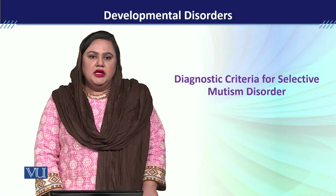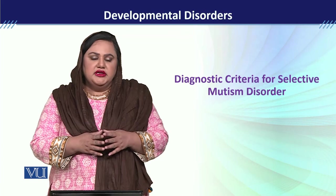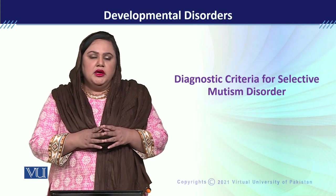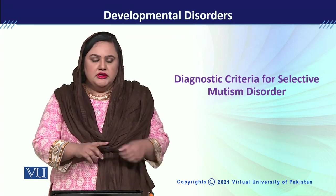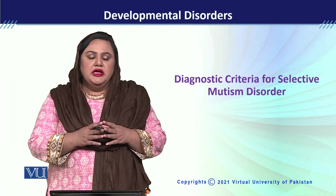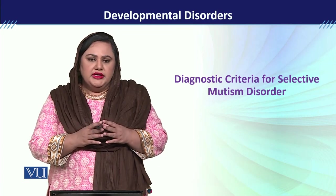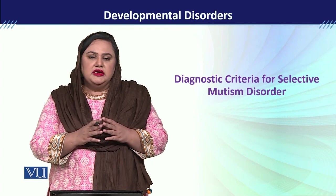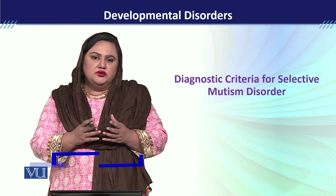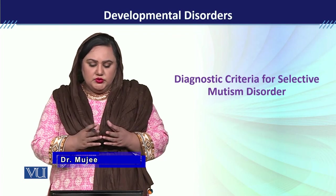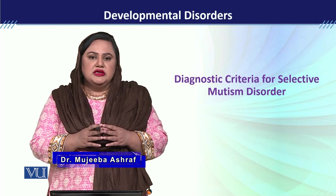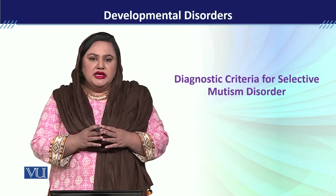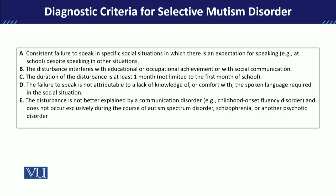Module 110: Diagnostic Criteria for Selective Mutism Disorder. Now we will discuss the diagnostic criteria for Selective Mutism Disorder. We need to observe the time period during which we see children in certain situations so we can give a Selective Mutism Disorder diagnosis. We will also see what the manifestation of this disorder looks like. Here we go with the Diagnostic Criteria of DSM-5.